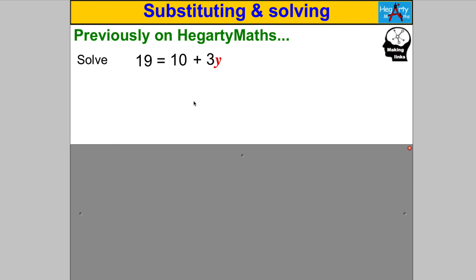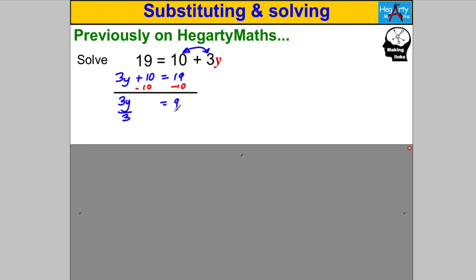Let's start by linking to things we already know. Previously on HegartyMaths you would have solved something like this — pause the video and double check you can do that. If I got something like this, the first thing I'd do is write the variable on the left hand side and swap the order of the addition, since addition is commutative. So my first line of working: 3y + 10 = 19. Then I undo the add 10 by subtracting 10 from both sides, giving 3y = 9, then divide both sides by 3, so y = 3. Check: 3×3=9, 10+9=19. Correct.